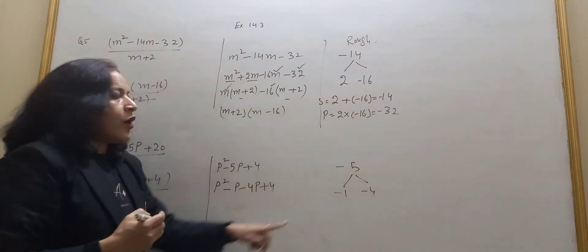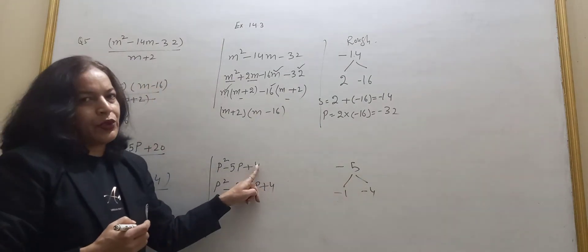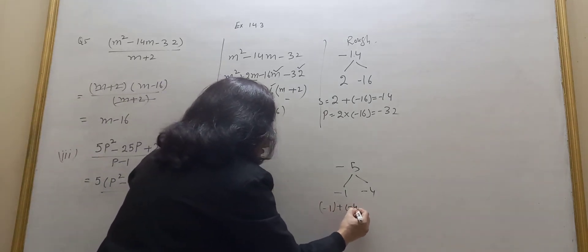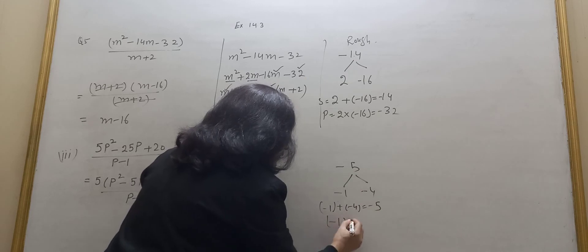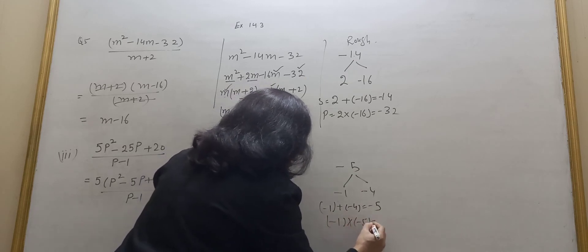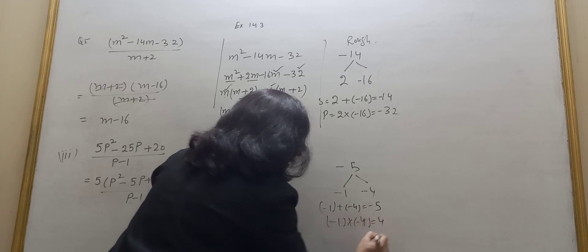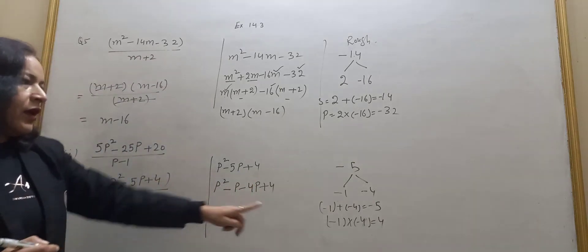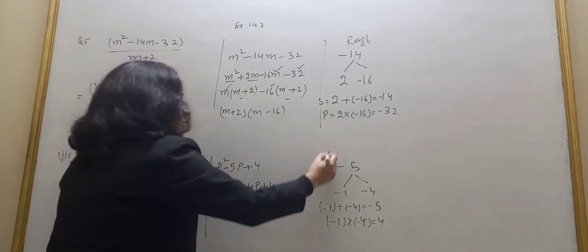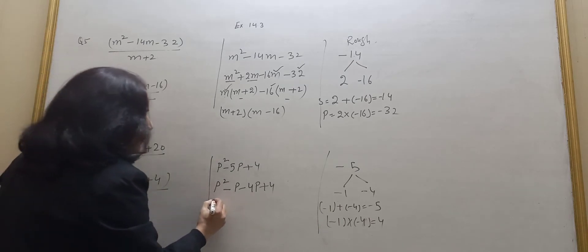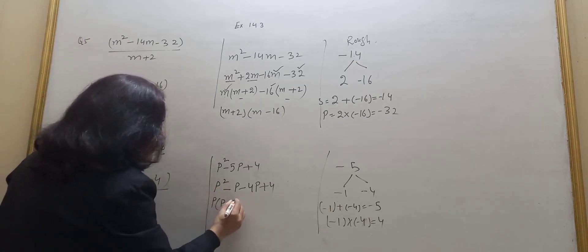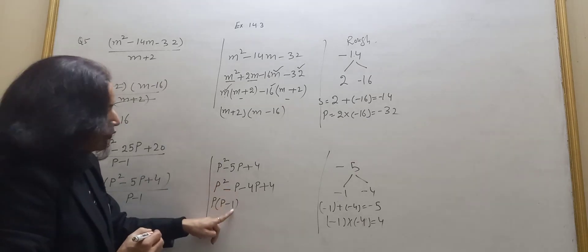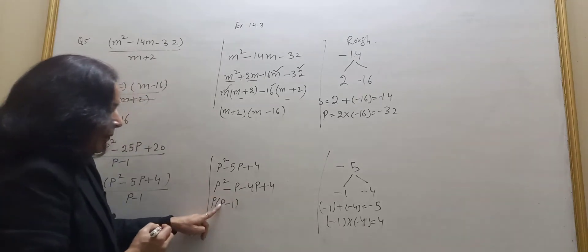When you add minus 1 and minus 4, you get minus 5. And their product: minus 1 into minus 4 gives plus 4. So you get minus 5 as the sum and product 4. Now write: p squared minus p minus 4p plus 4. Take p common from the first two terms — inside is p minus 1. Here p comes outside; inside one remains.